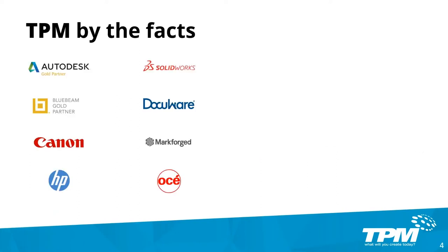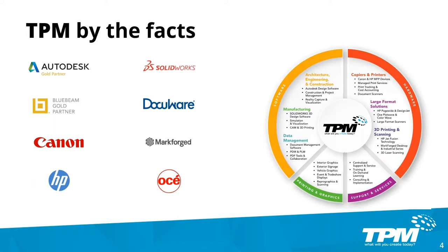Before we jump in, here's a brief overview of TPM. We work predominantly in the manufacturing and the architectural, engineering, and construction space. We have multiple divisions — we provide data management, support, and training services, a hardware division that sells 3D printers, scanners, copiers, and plotters, and a printing and graphics division that offers signage and vehicle wrap. At TPM we believe in partnership and want to provide you all with the best solutions and right technology to make you successful. Without further ado, Joel, take it away.